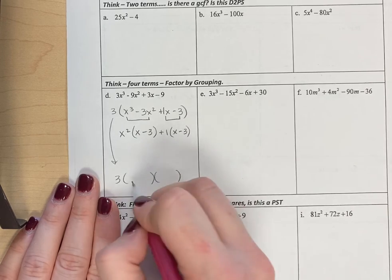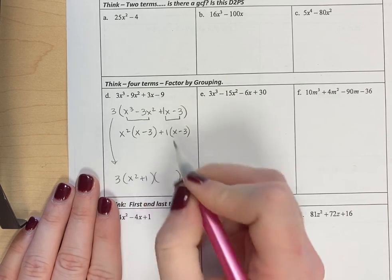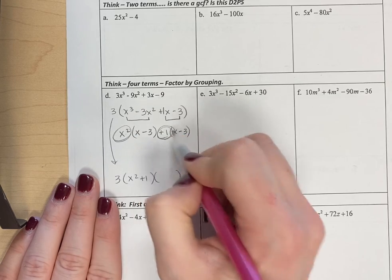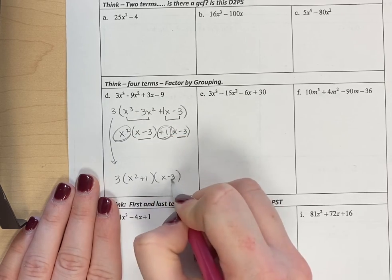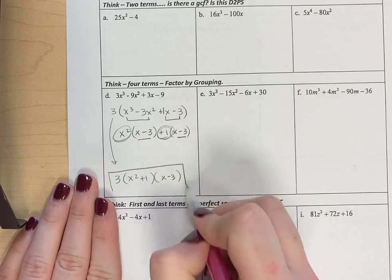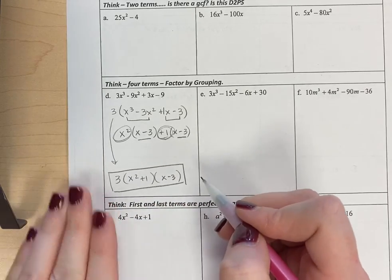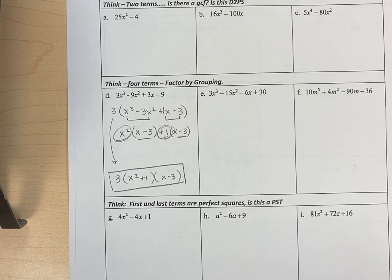These two factors match, so I did my grouping correctly. So I have x squared plus 1 as one of the factors, and then x minus 3 as the other. So there's just a couple of examples where you have to first factor out a GCF before you do your grouping.